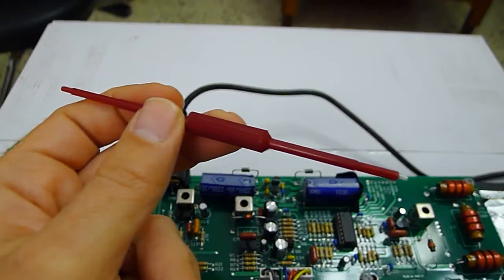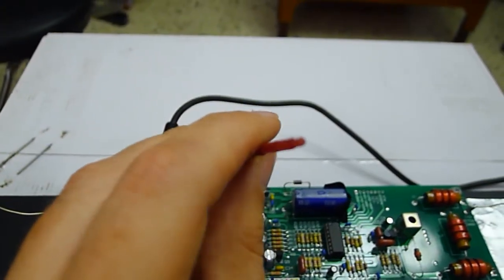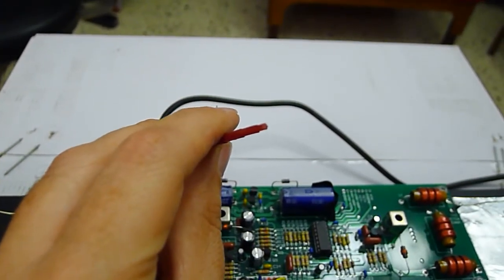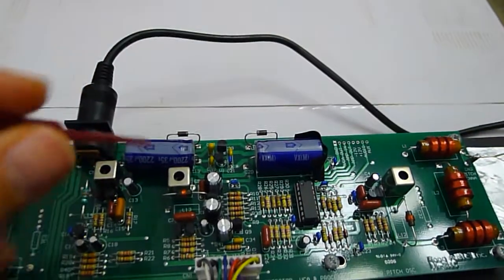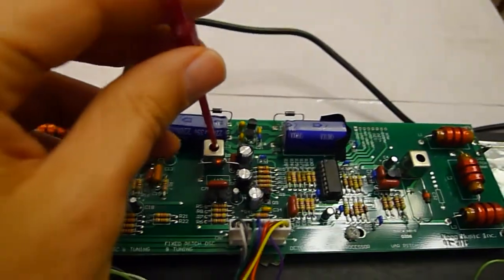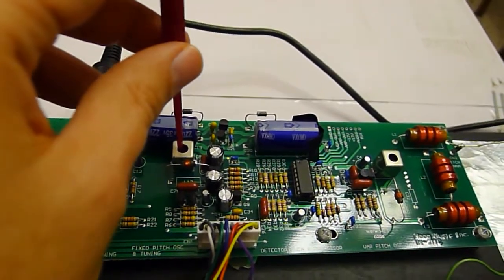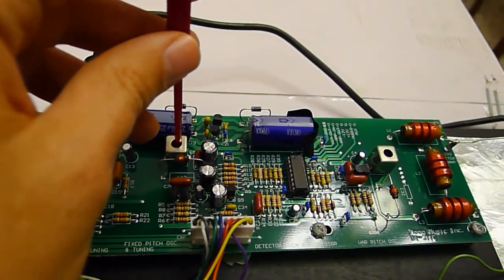Use the included plastic allen tool to turn the slugs in the inductor on the circuit board. You don't want to use a metal allen wrench because it will change the coil's inductance.